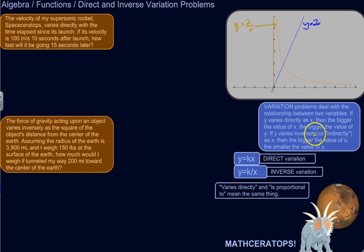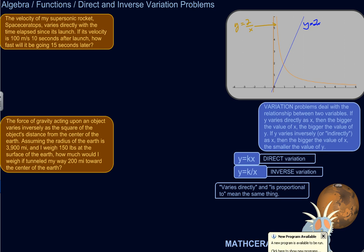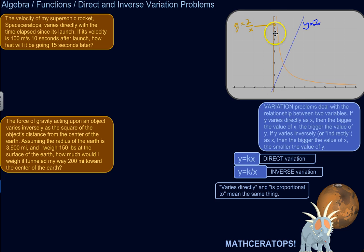If y varies inversely as x — you might also hear it called y varies indirectly as x, though inversely makes more sense and is what I've heard most often from science people — then the bigger the value of x, the smaller the value of y. As x is increasing, y is decreasing.